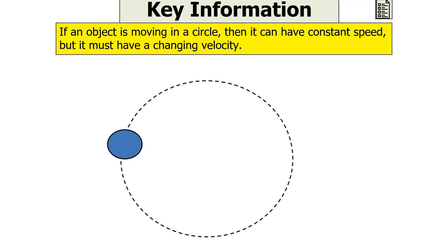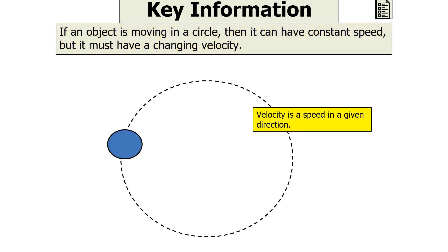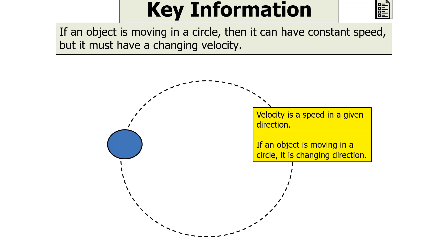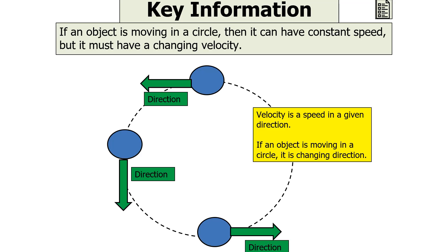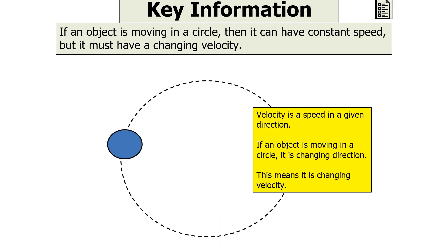If an object is moving in a circle, it can have a constant speed but it must have a changing velocity, because velocity is speed in a given direction. As shown in the figure on screen, an object moving in a circle is constantly changing direction, so its velocity is changing, which means it is accelerating.